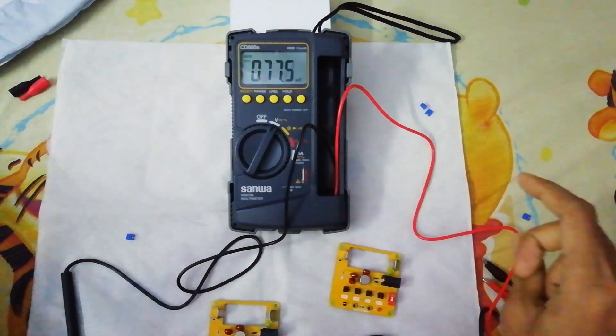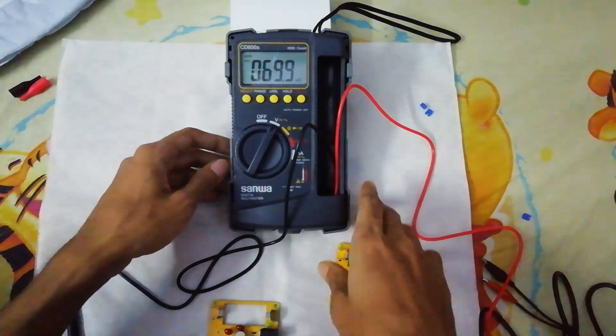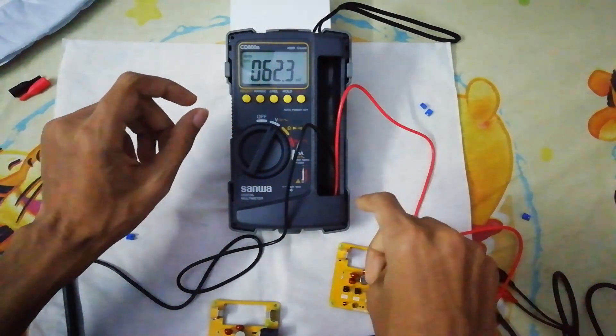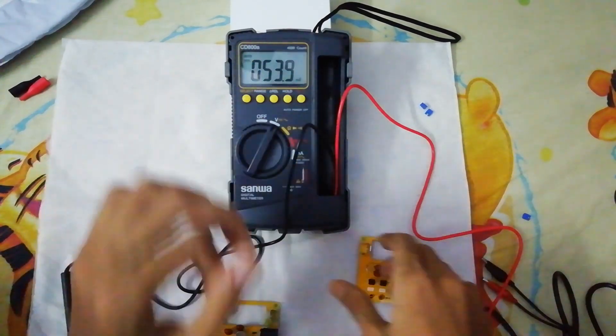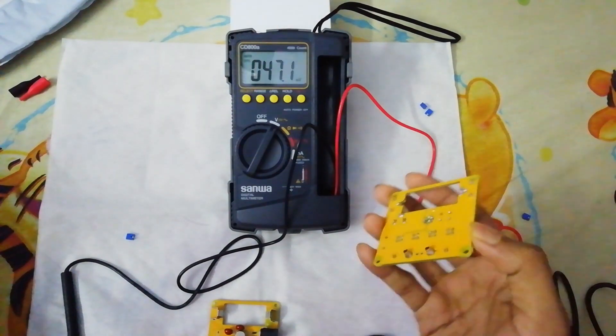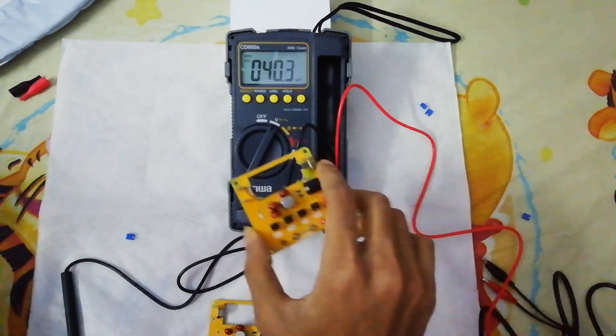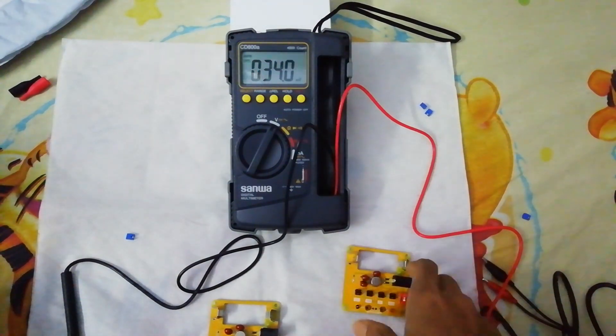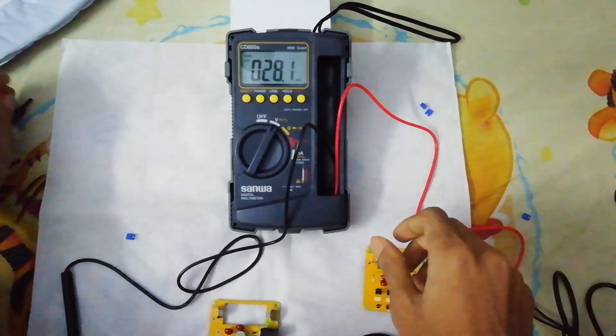But below 4 volt range it will give you some issues because I have tested 2.5 volt precision voltage measurement with this and it shows 2.49 in auto ranging mode, and in manual range it shows 2.50. So I think in auto ranging mode it is okay, but in manual mode it will give you lower values below 4.00 voltage range in this multimeter.